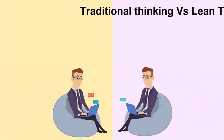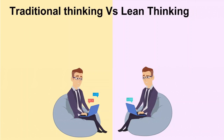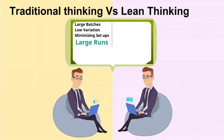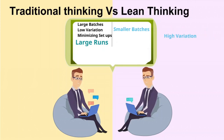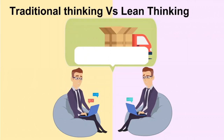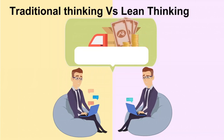Let us look at how traditional thinking versus lean thinking works. Traditional thinking in manufacturing was all about large batches, low variation, and minimizing setups. Traditional thinking also prioritizes large runs first. But this does not contribute to a better cash situation for a company. If there are smaller batches and high variation, then the finished product goes to the customer much faster and the cash comes back faster. It is very ideal.